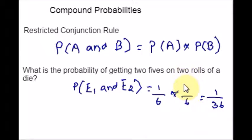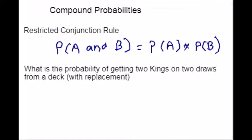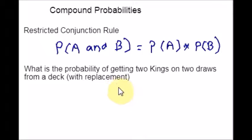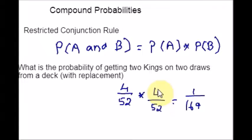So far we have seen direct examples. Now I am going to take one example with replacement: what is the probability of getting two kings on two draws from a deck? Totally there are 52 cards in a deck and there are four kings, so four out of 52. And since you are replacing it back, you will again have four kings in the deck. So the answer is four over 52 times four over 52.